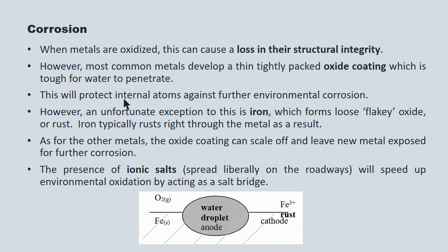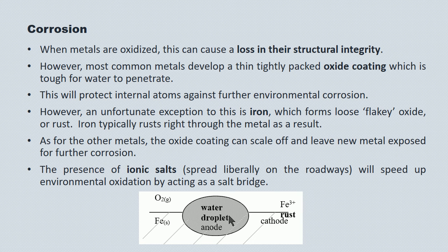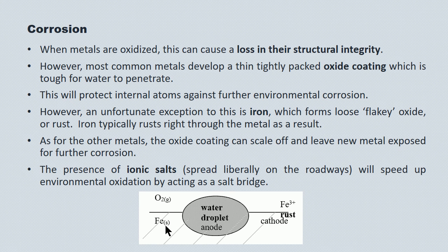Here we see iron exposed to the elements. A water droplet falls on the iron surface and, of course, it has dissolved oxygen in it — that's our combination of oxidizers, oxygen and water. Electrons flow from the iron metal, which is the reducing agent, to the water droplet, which is the oxidizing agent. The metal becomes depleted of electrons — it becomes oxidized, or rusted.